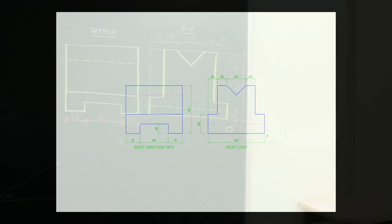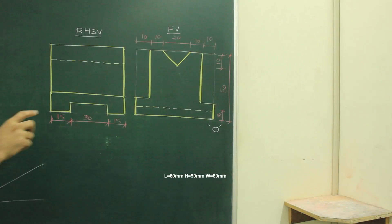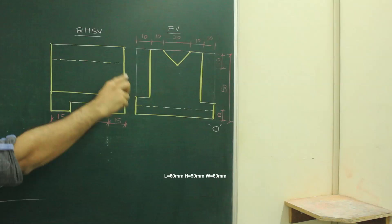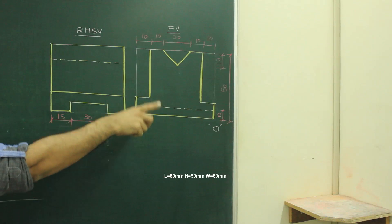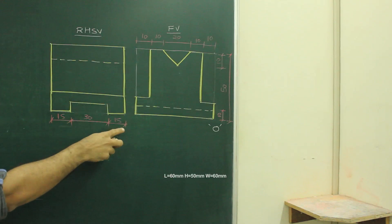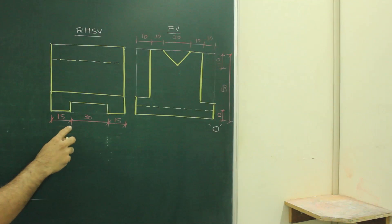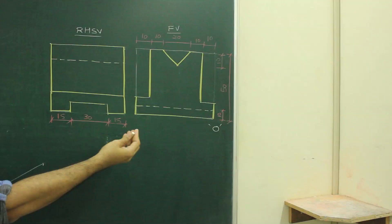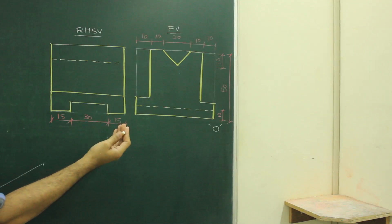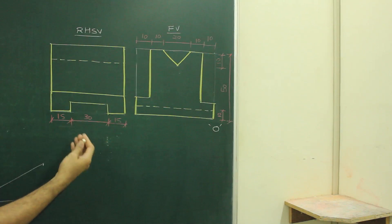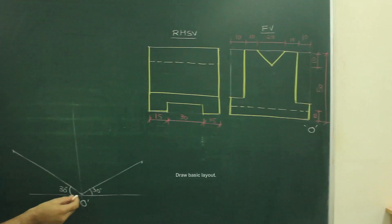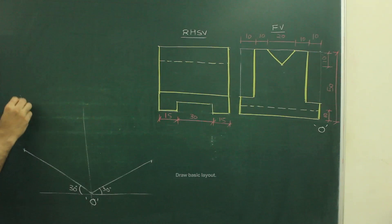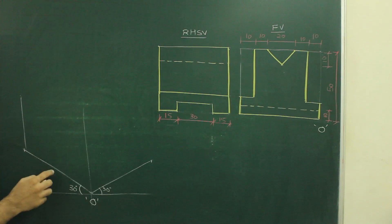In this sum, length is 60. If you see the front view, there will be length 60, height 50 and width 60. And there will be an origin on that side. So we have 60 on the left hand side. We will draw the origin and we will take 60 on the left side and then we will start.